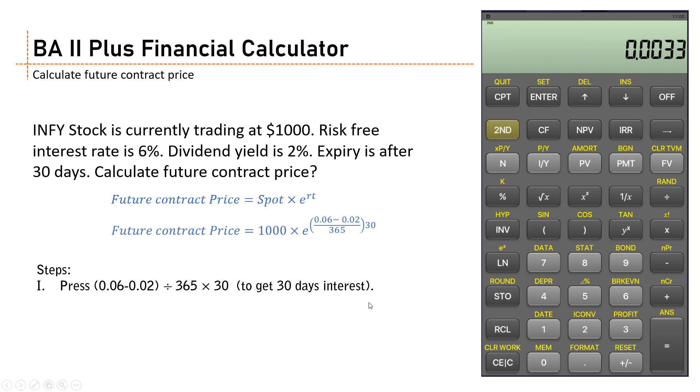So press second key and then press the LN key. After pressing the LN key, you get the continuous interest rate or continuous compounded interest rate.